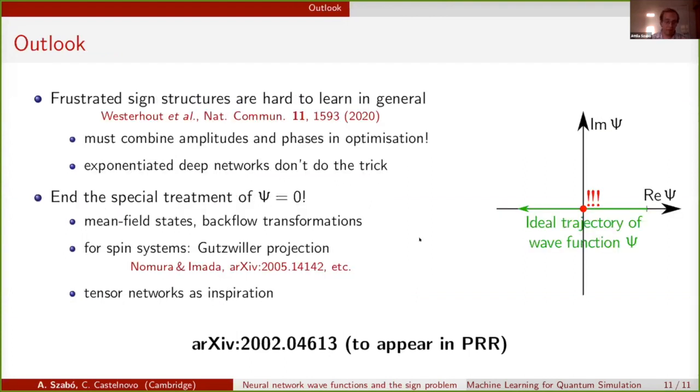If I have a bit more time to give some outlook, as I said before, frustrated sign structures are a difficult object to learn in general. Therefore it seems that it's important to combine amplitudes and phases in the optimization, but exponentially deep networks don't seem to be the right direction to go with this. I believe the reason is that if we represent a wave function as the exponential of something, it necessarily will treat psi equals zero, the wave function equals zero, as a special point. That's a problem because if we start with an all-real initial guess and we want to end up in an all-real ground state wave function, then the optimization protocol will by necessity cross through this special point, and that can lead to all sorts of problems.